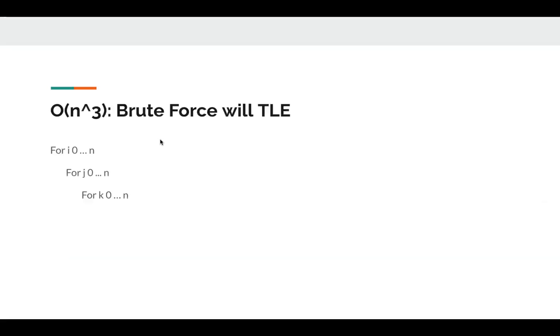A naive solution is we can have three for loops for i, for j, for k and then check if the sum is zero. If it's zero, we can include them, otherwise we exclude them. This algorithm will take O(n^3) and it definitely will TLE. So we need to optimize our algorithm a little bit, for example, O(n^2).